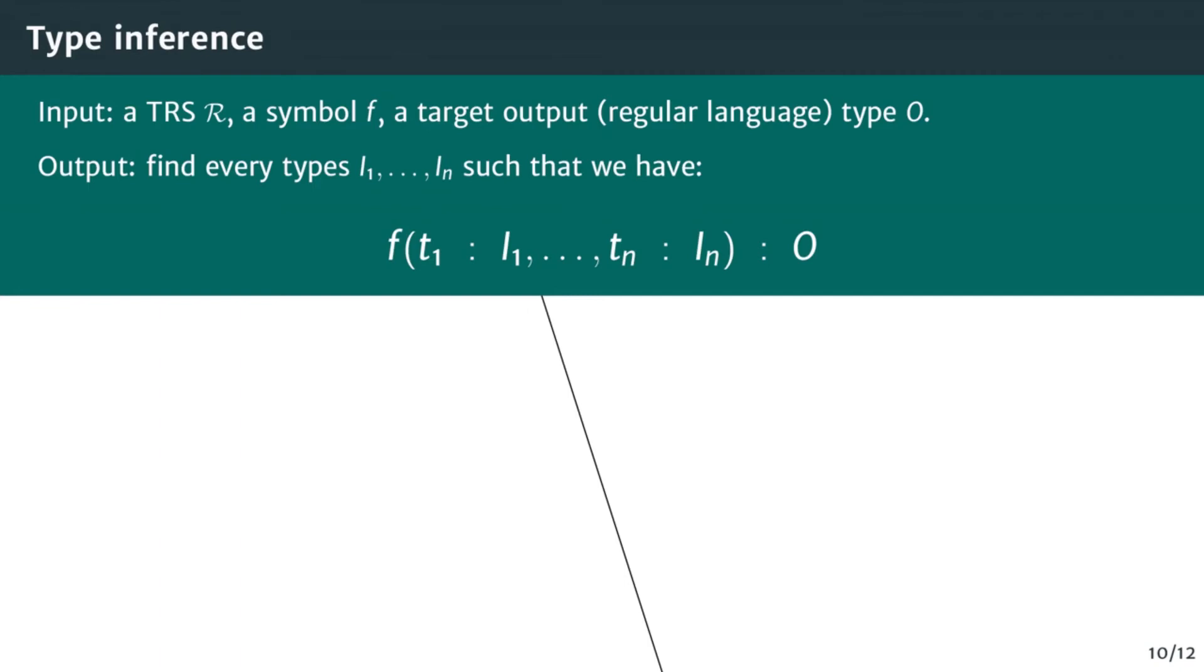The problem is as follows. As input, we have a rewriting system, a symbol F and an output regular language type O. We want to find every input type A1 to An such that every term F is typed with O when each Ti is typed with Ai. This can be summarized with the following abstract rewriting rule for F.